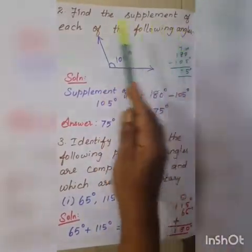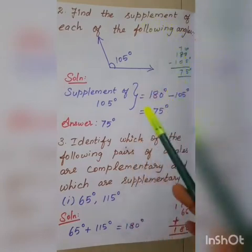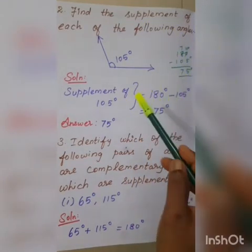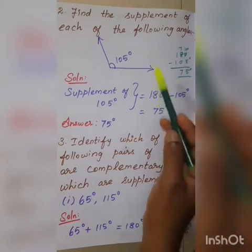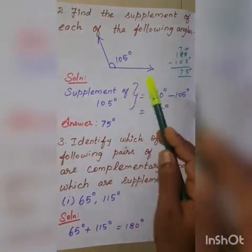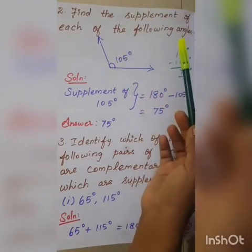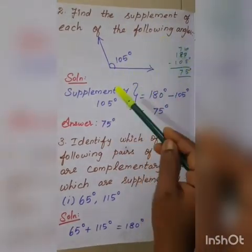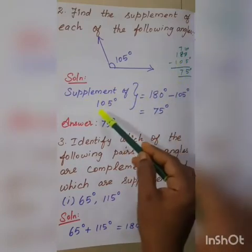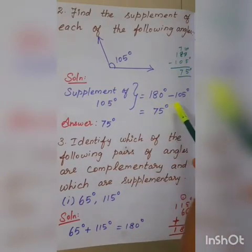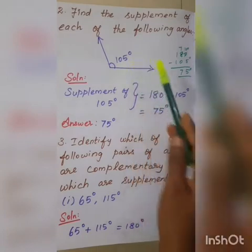Second one: find the supplement of each of the following angles. The given angle is 105 degrees. Supplementary angles means the sum of the measures of two angles is 180 degrees. So the supplement of 105 degrees equals 180 degrees minus 105 degrees. The answer is 75 degrees. So 75 degrees is the supplement of the angle 105 degrees.